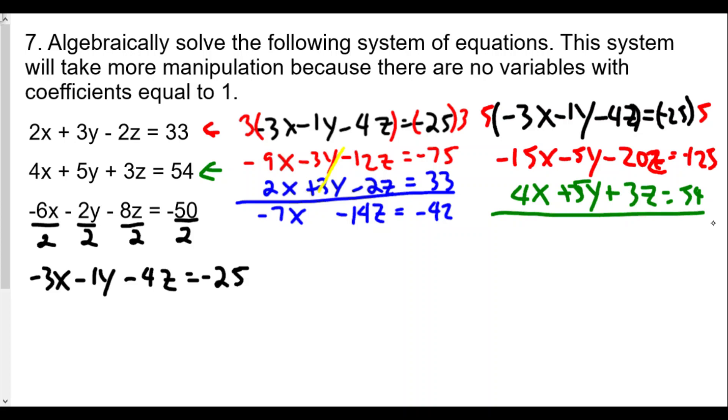Then we're going to add underneath it the second equation, 4x plus 5y plus 3z equal to 54. If we add downwards, the negative 15x plus 4x will give us negative 11x. The negative 5y and the positive 5y cancel each other out. And negative 20z plus 3z will give us negative 17z. And the negative 125 plus 54 will give us negative 71.